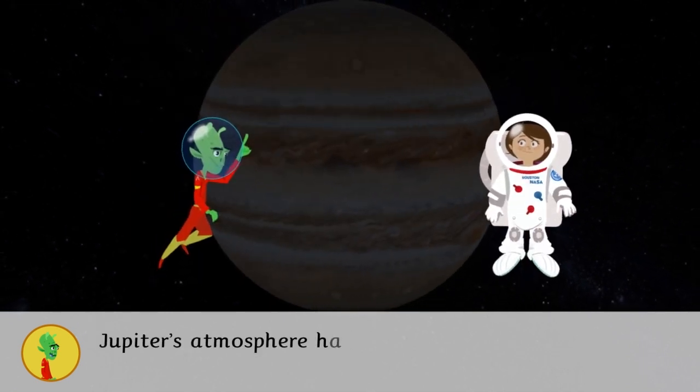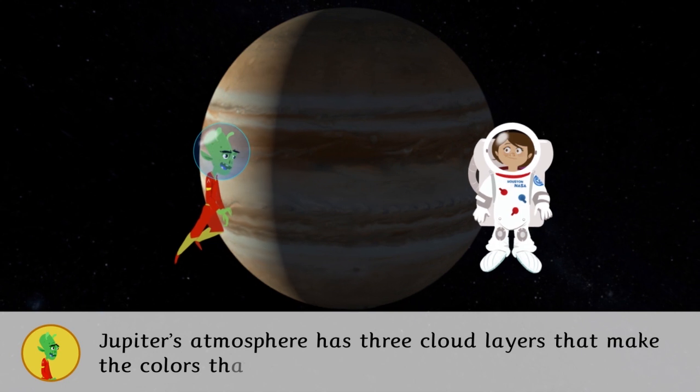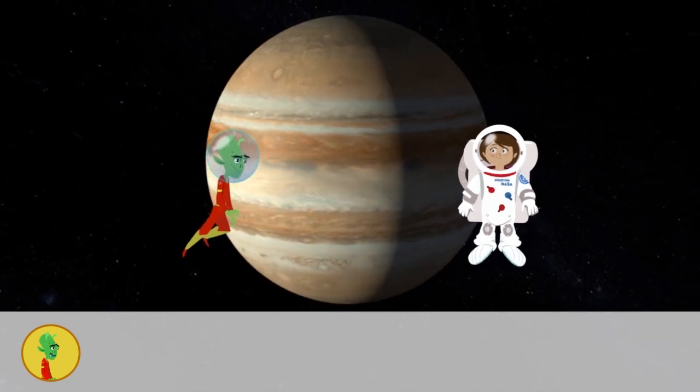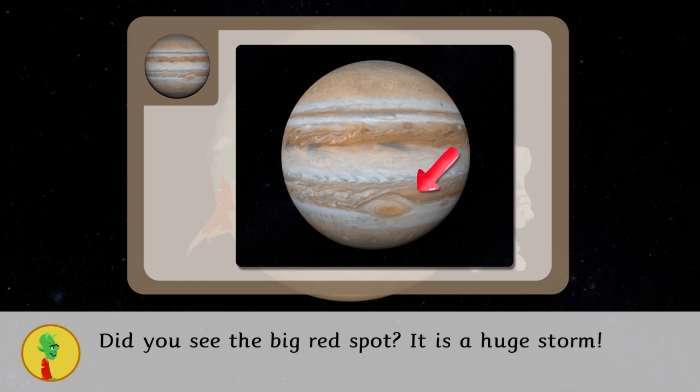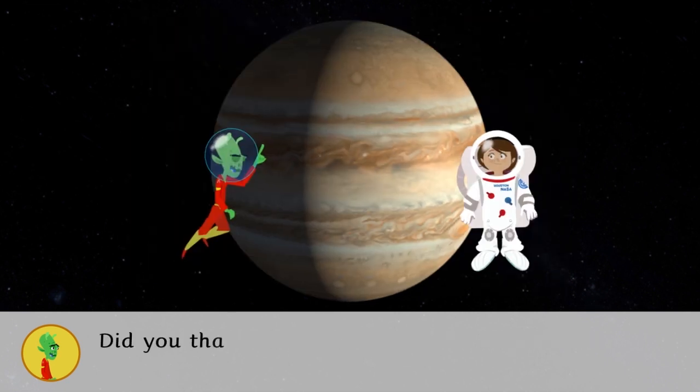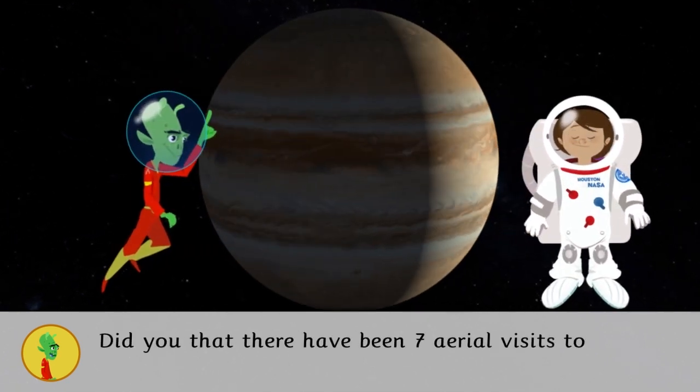Jupiter's atmosphere has three cloud layers that make the colors that we see. Did you see the big red spot? It is a huge storm. Did you know there have been seven aerial visits to Jupiter?